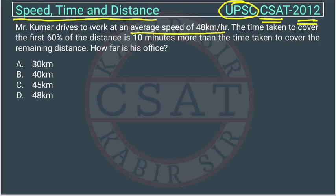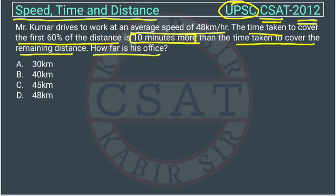The speed of Mr. Kumar is 48 km per hour. The time taken to cover the first 60 percent of the distance is 10 minutes more than the time taken to cover the remaining distance. How far is his office?